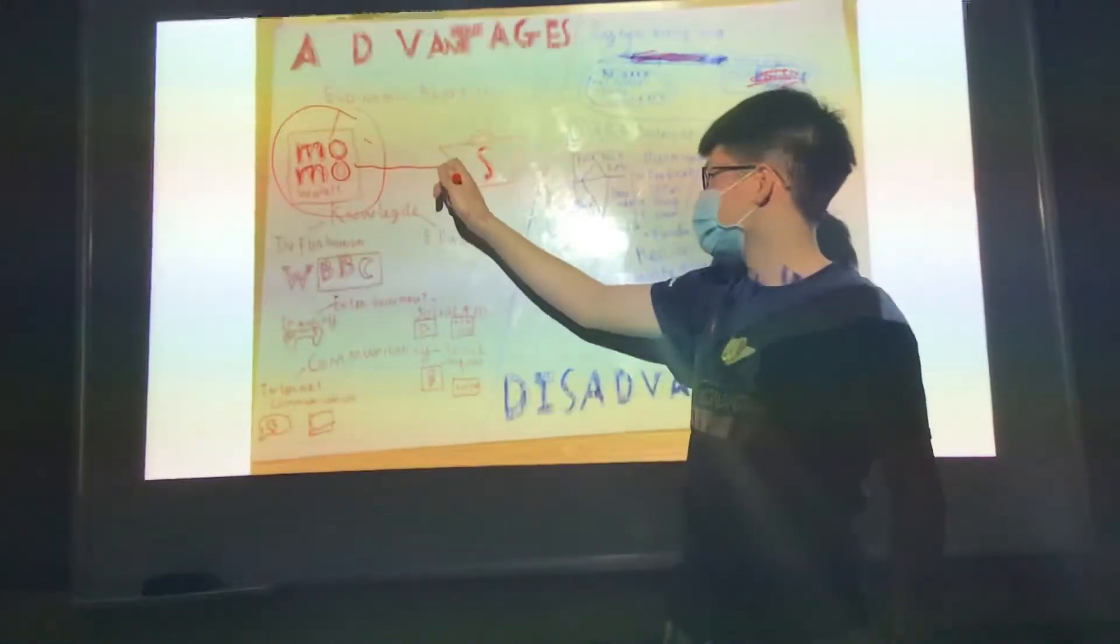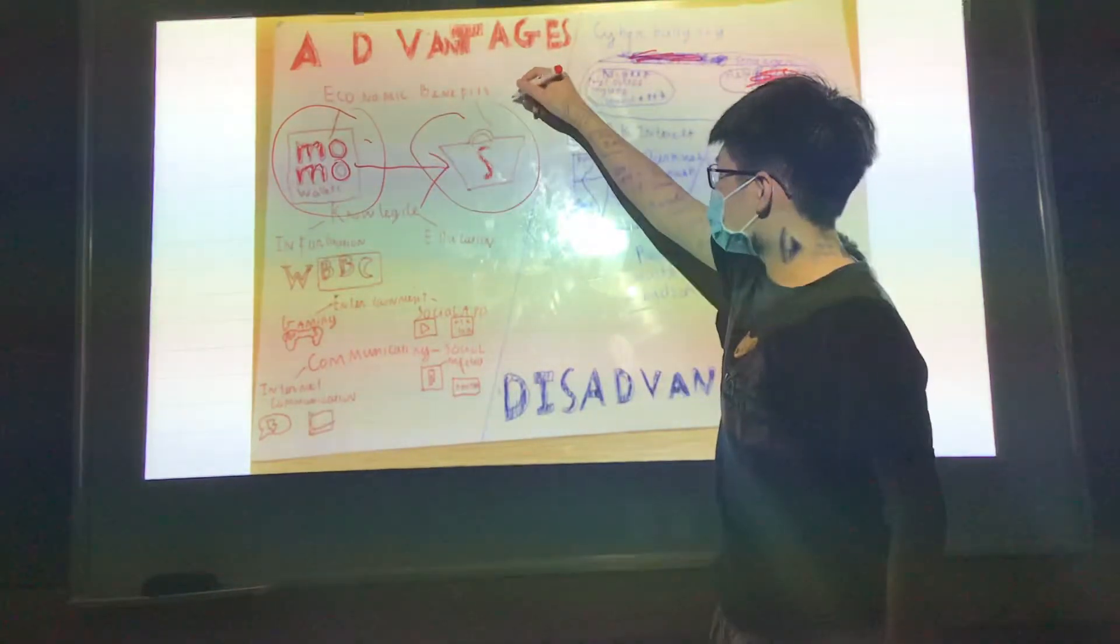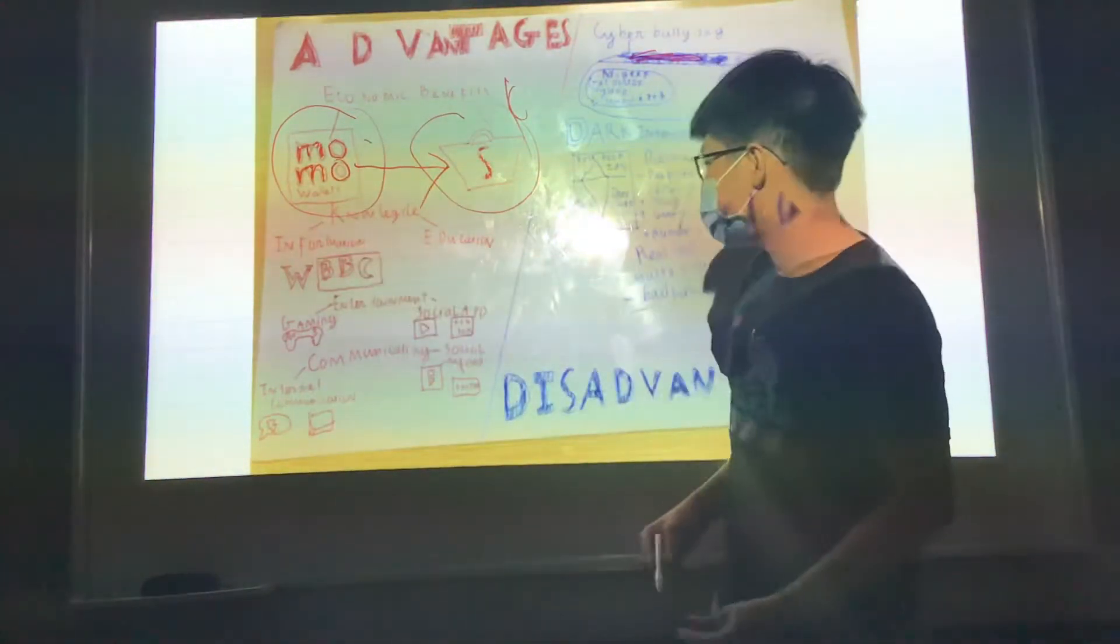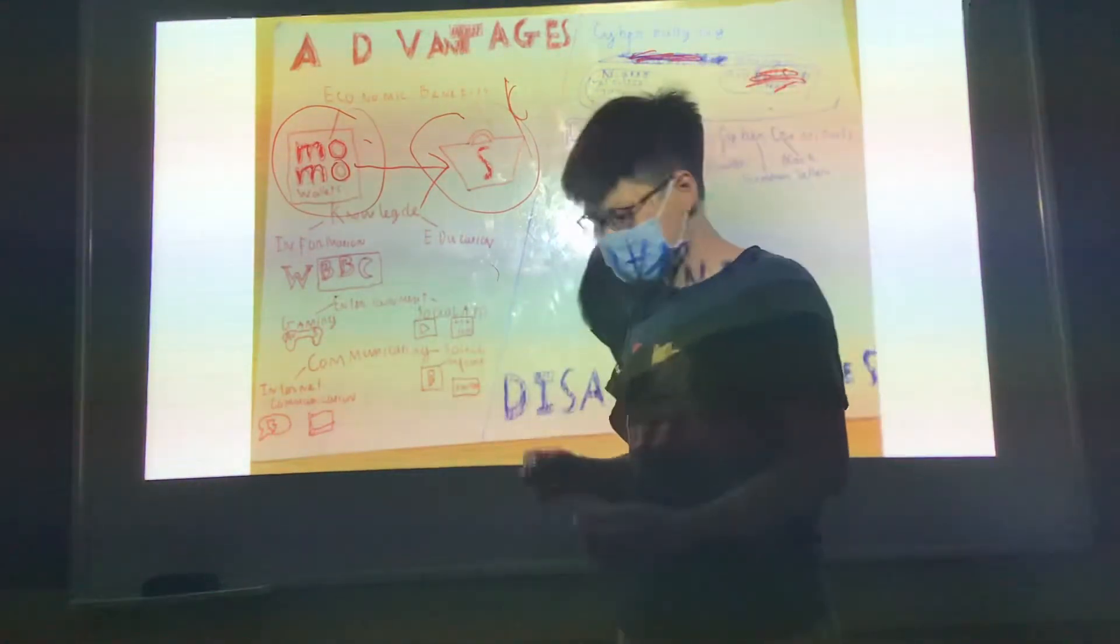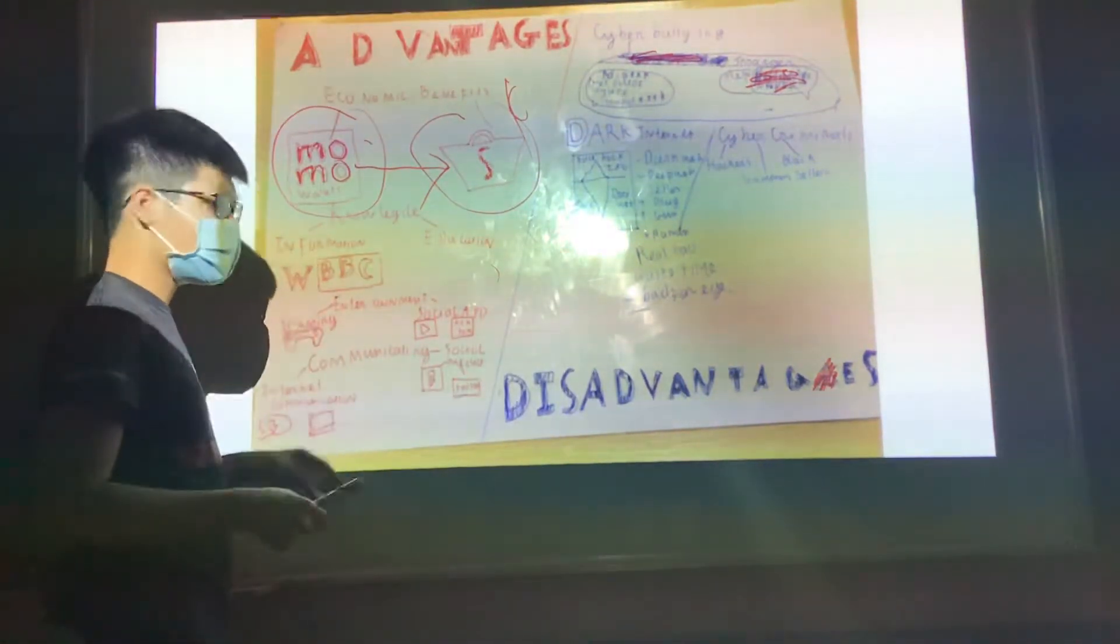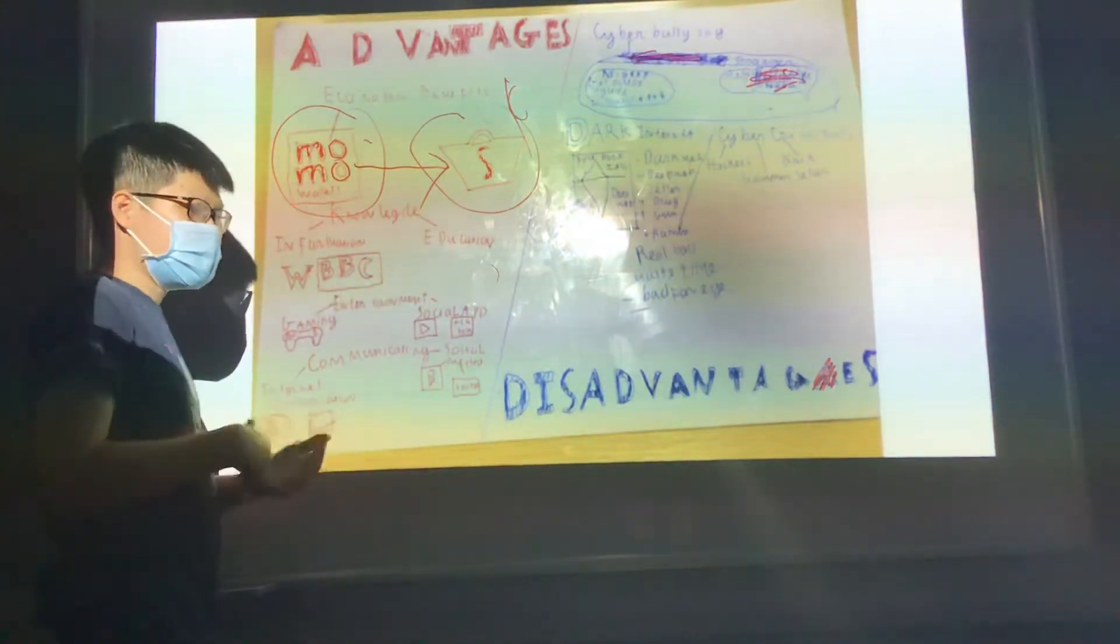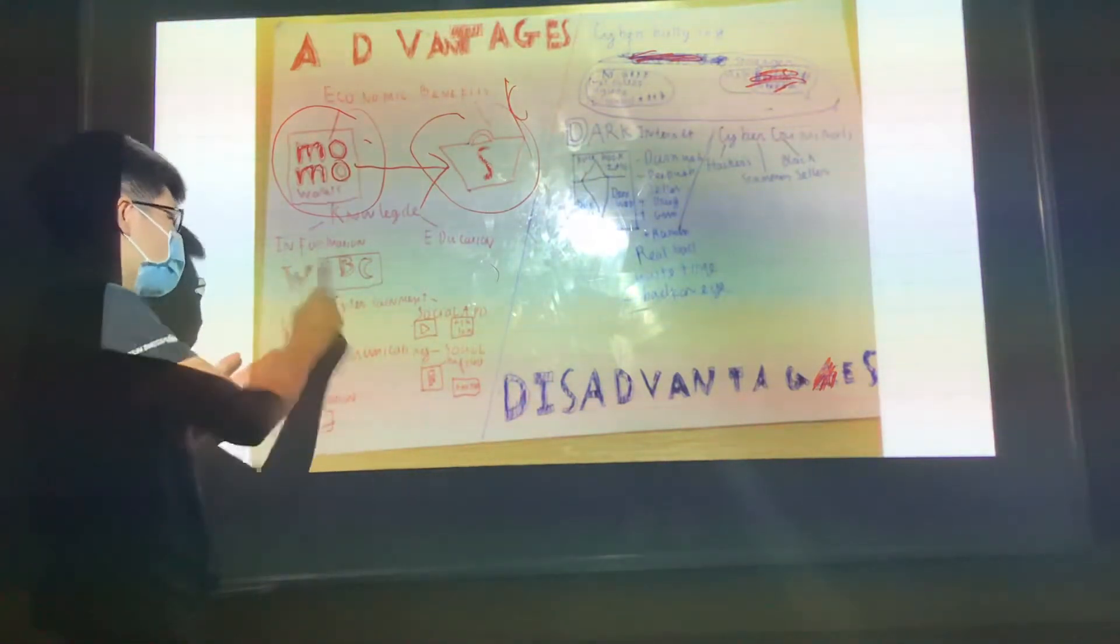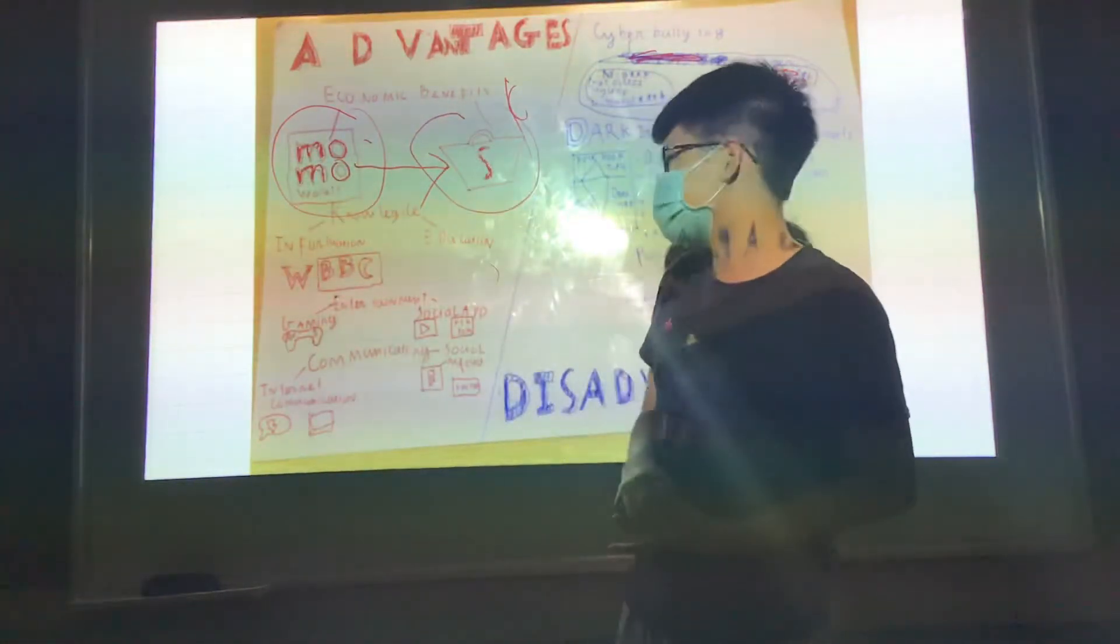Next is knowledge. We have information and education. In information, we have lots of websites that talk about information, the things you don't know, like the website is Wikipedia. It helps you know the things you don't know.